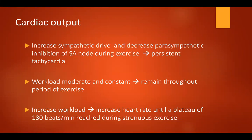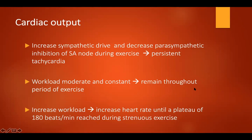Cardiac output increases during sympathetic drive and decreases during parasympathetic inhibition of the SA node during exercise. If there is a problem between sympathetic and parasympathetic, there will be persistent tachycardia. Increase in workload will increase the heart rate until a plateau of 180 beats per minute is reached during strenuous activity. However, if the patient has complete heart block, they will not have an increase in heart rate even during exercise.